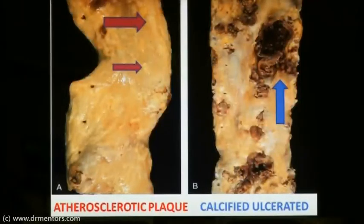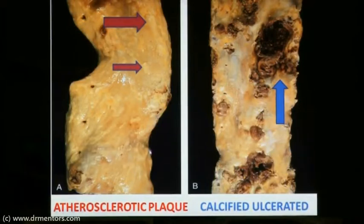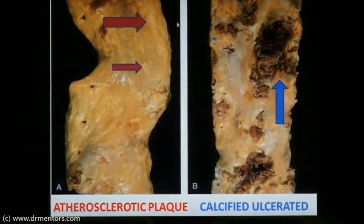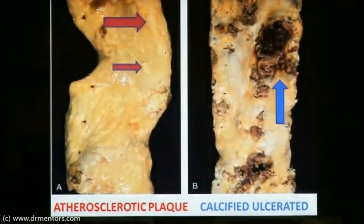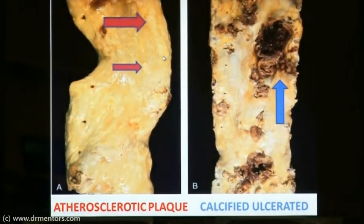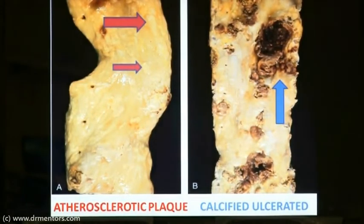The first specimen shows the gross appearance of atherosclerotic plaque. This is a cut section of an aorta, and you can see numerous plaques. This is one plaque, another one is over here, and this is another one. All these raised surfaces are nothing but atherosclerotic plaques.